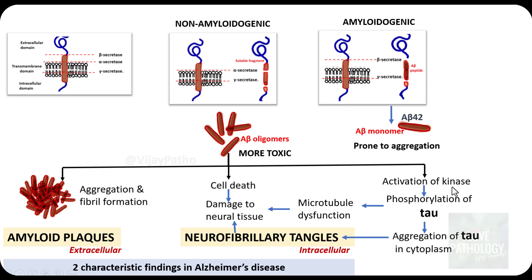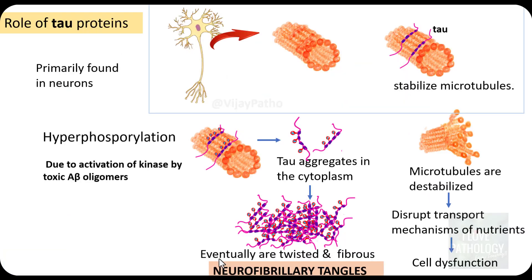Amyloid plaques also activate kinase, which results in phosphorylation of tau proteins, which then go on to become neurofibrillary tangles. Amyloid plaques and neurofibrillary tangles are the two most important characteristic findings in Alzheimer's disease, which is what we will be trying to understand in the pathologic features. A bit about tau proteins — it is the hyperphosphorylation of tau proteins which results in the formation of neurofibrillary tangles.